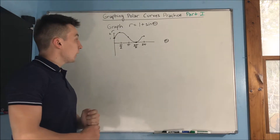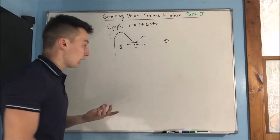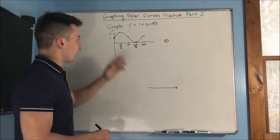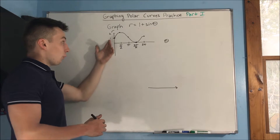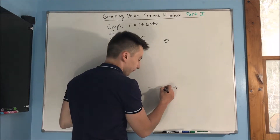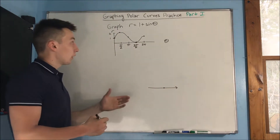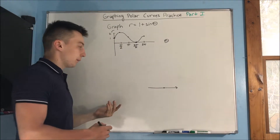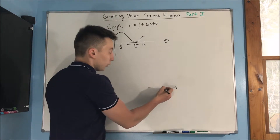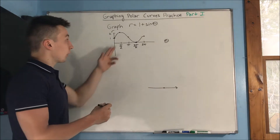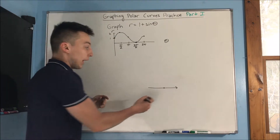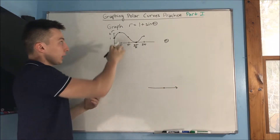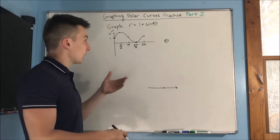Now we need to interpret this as a polar graph. We start off at 1 comma 0, so we're going to start here. From there, we are going to go out to 2 at theta equals pi over 2. We're starting off increasing very fast, so we're going to go out first and kind of mellow off — it's going to look more circular at the top.